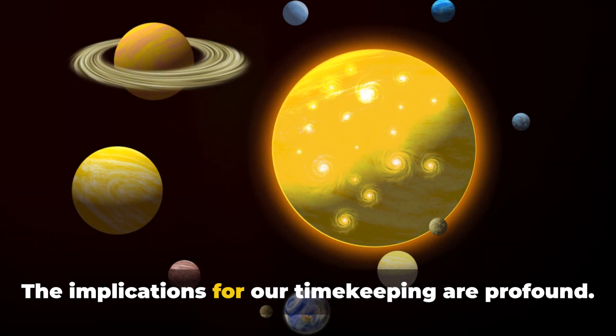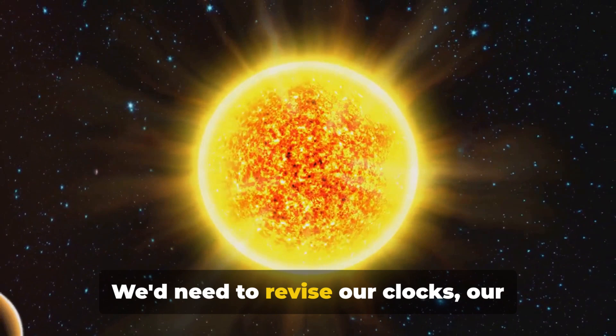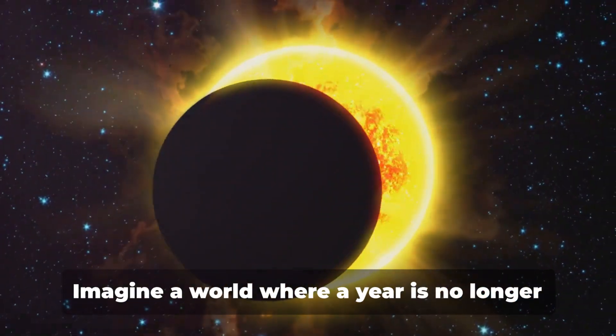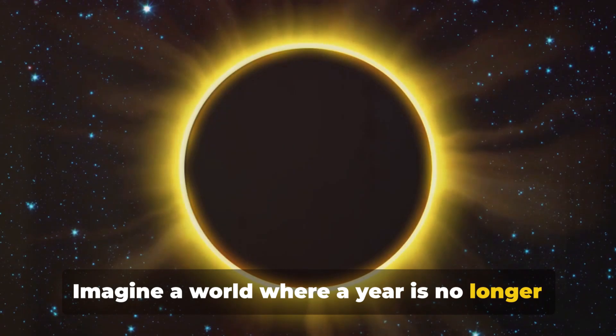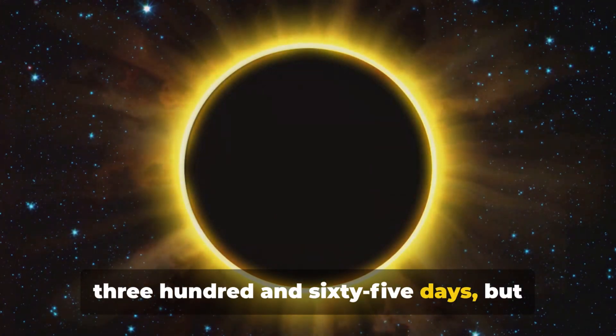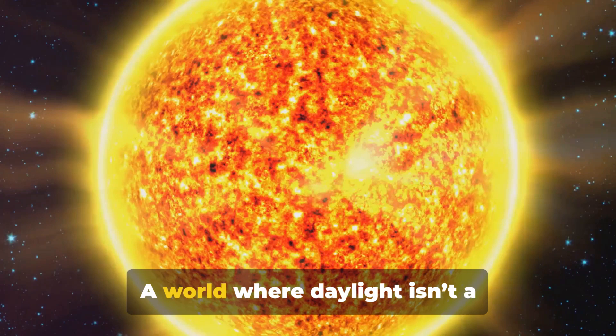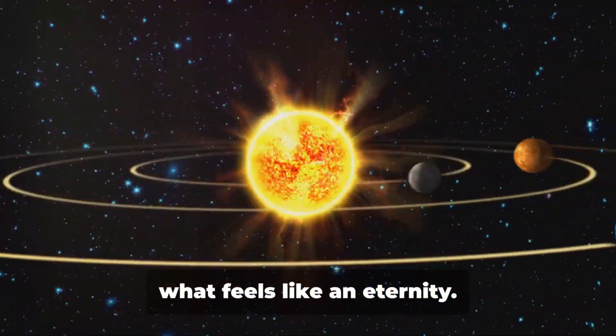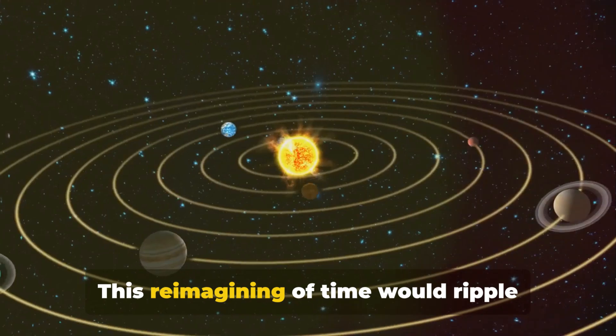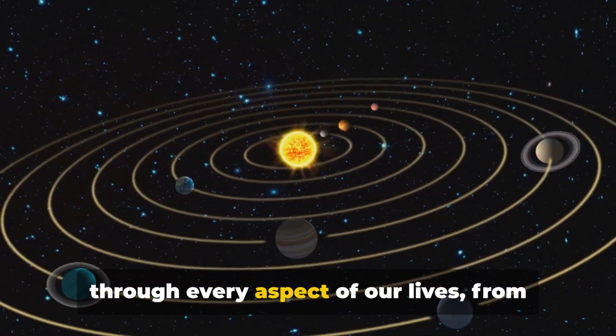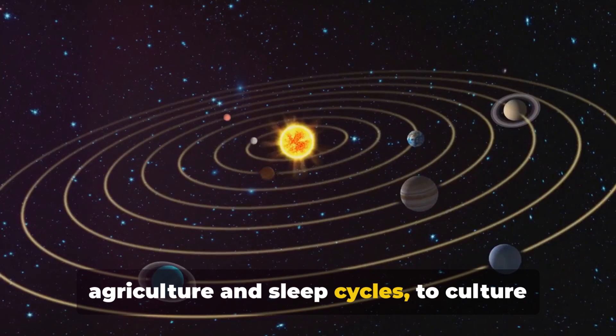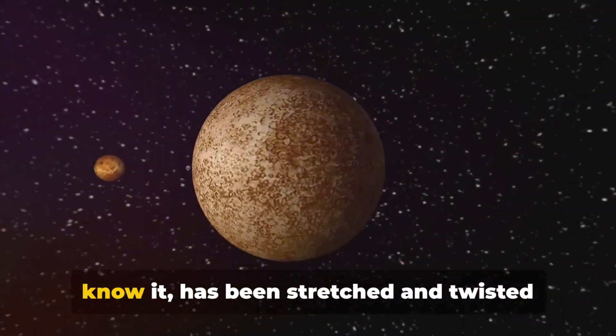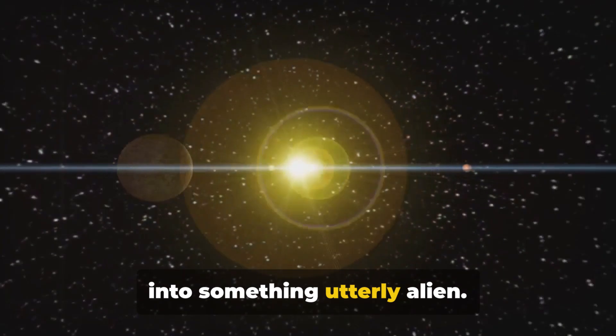The implications for our timekeeping are profound. We'd need to revise our clocks, our calendars, even the way we conceive of age. Imagine a world where a year is no longer 365 days, but perhaps a thousand or more. A world where daylight isn't a 12-hour affair, but stretches on for what feels like an eternity. This reimagining of time would ripple through every aspect of our lives, from agriculture and sleep cycles to culture and philosophy. It would be a world where time as we know it has been stretched and twisted into something utterly alien.